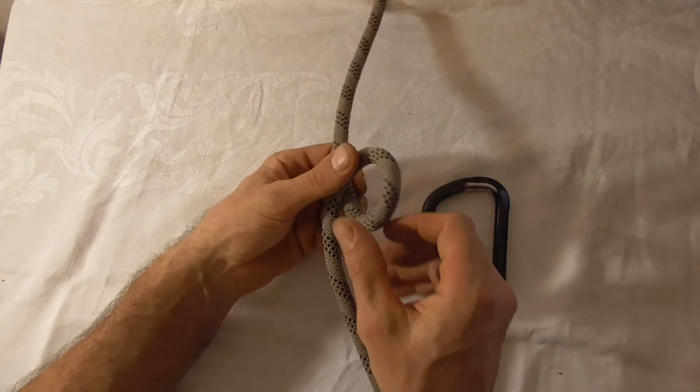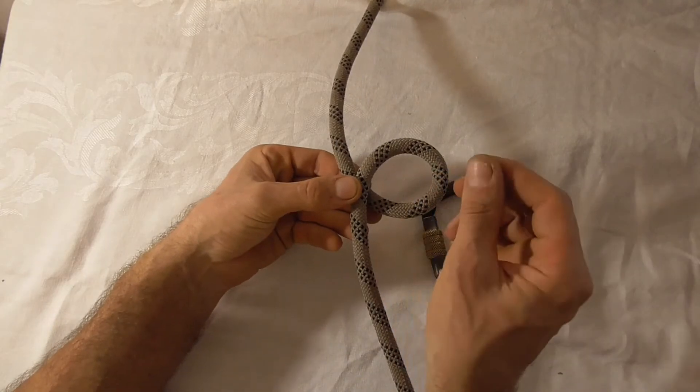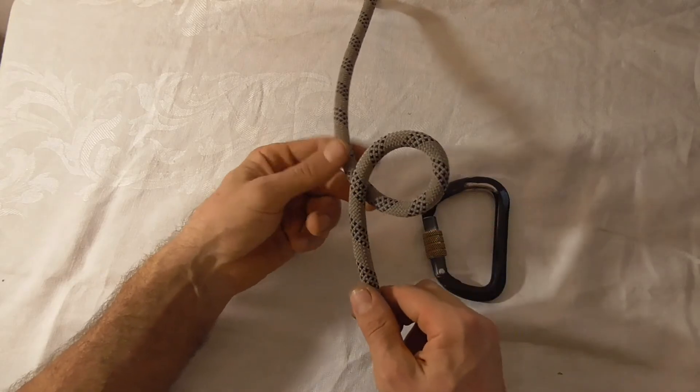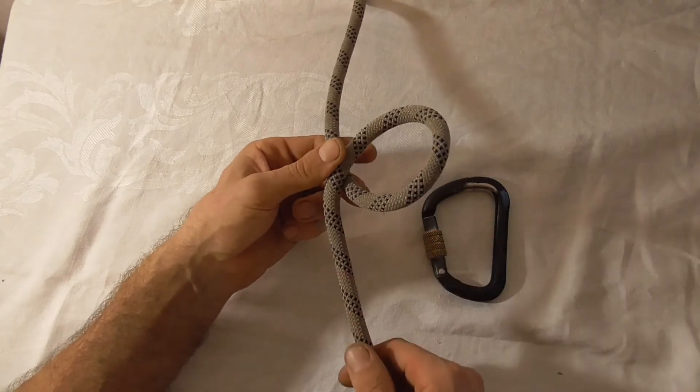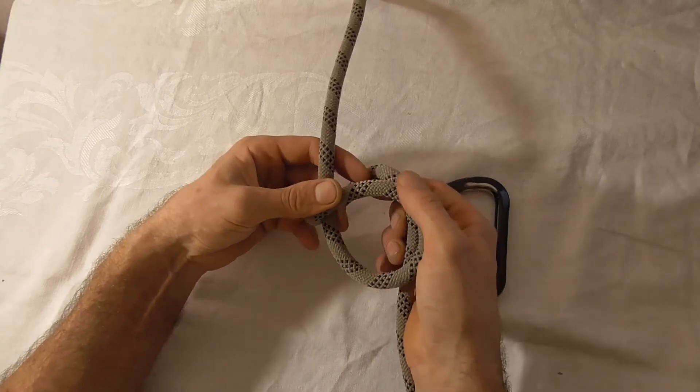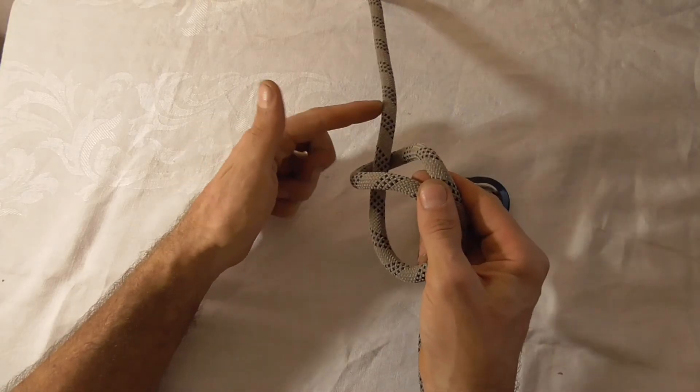to put an overhand loop in our rope just by rotating my right hand clockwise, and then I'm going to form a loop in the opposite direction around this part of the rope.